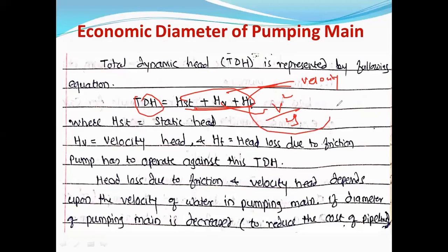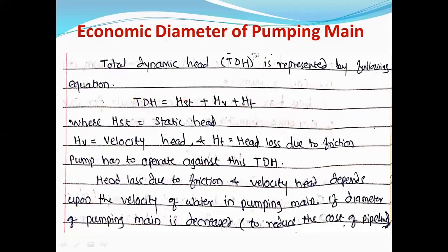The head loss due to friction is also dependent on velocity — from the Darcy-Weisbach equation: hf = 4fLv²/2g. In this equation, the head loss hf is directly proportional to the square of velocity. So as velocity increases, head loss due to friction and velocity head both increase. As these two heads increase, the total dynamic head increases, and the pump has to provide more power and utilize more electricity to overcome this head.